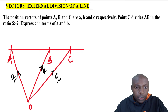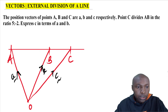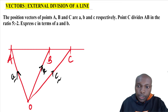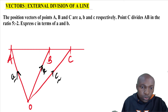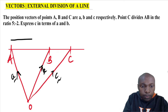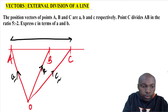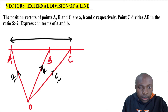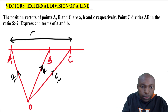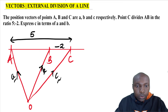Now let us indicate the ratio. C divides AB in the ratio 5 to negative 2. So the distance from A to C will be 5, then B to C will be negative 2.